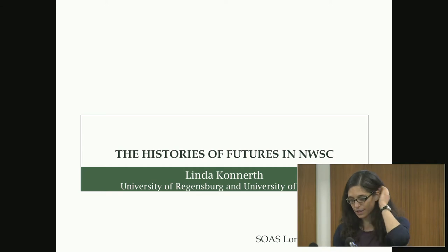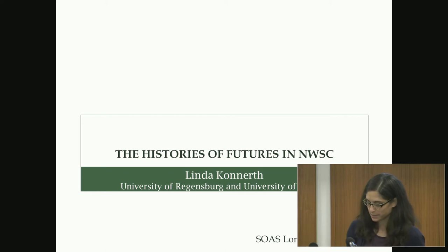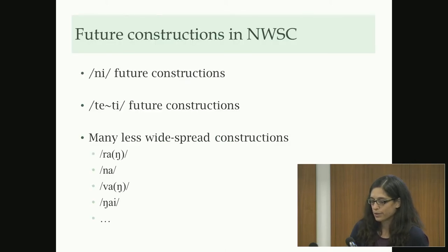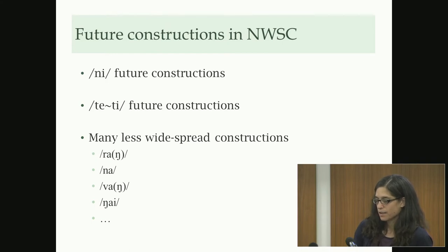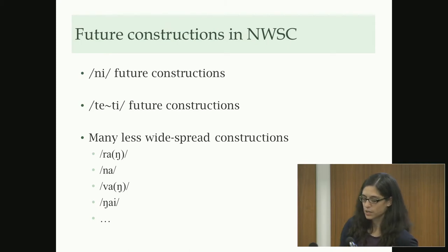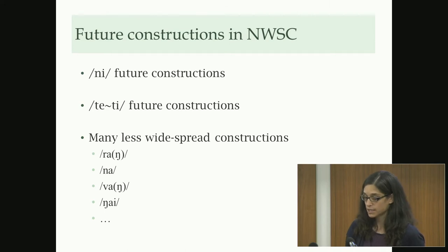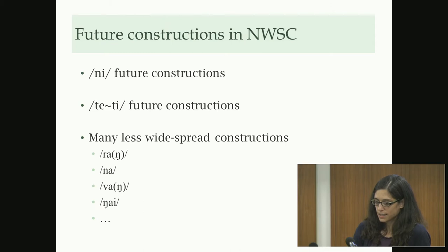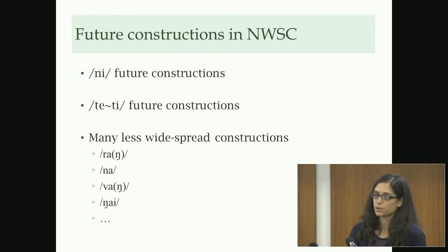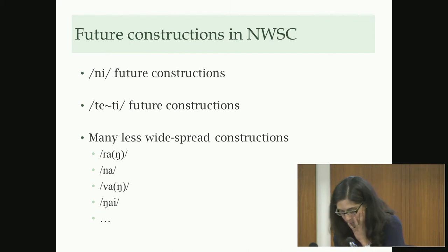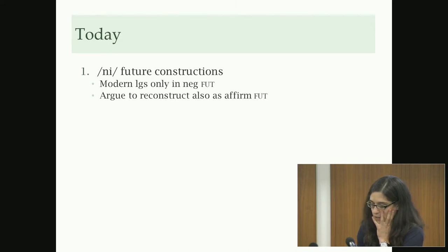Right now I'm still at the stage of collecting and sorting through information, really just able to ask the relevant questions. I'll start with two constructions that are particularly widespread: on the one hand a construction I call the 'knee' future construction, based on the equational copula, and on the other a construction based on the form T or Te, which is the verb 'to say.'